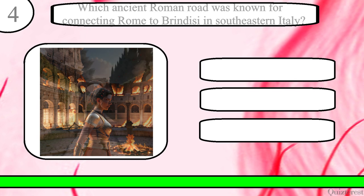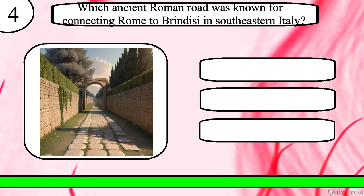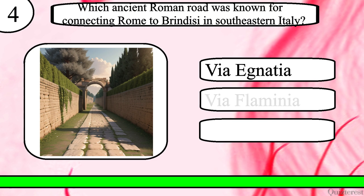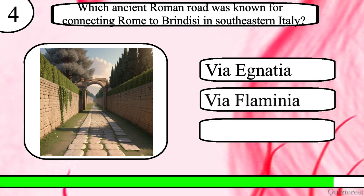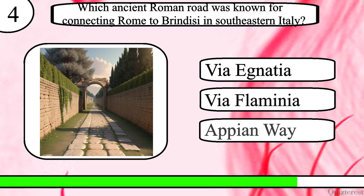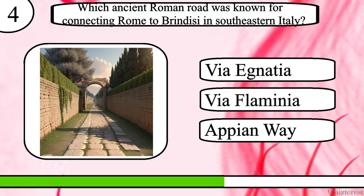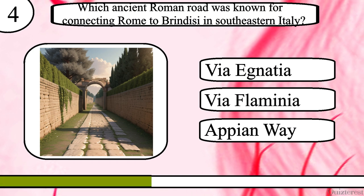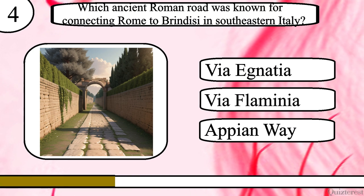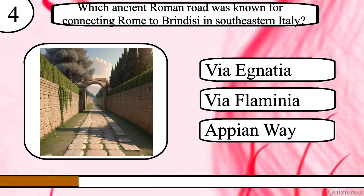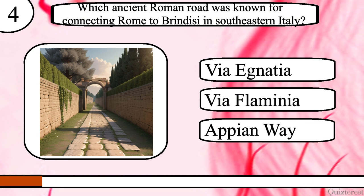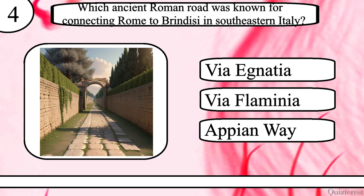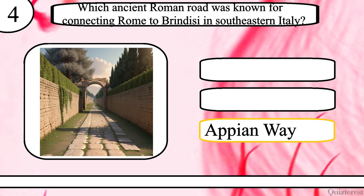Question 4. Which ancient Roman road was known for connecting Rome to Brindisi in south-eastern Italy? Via Ignatia, Via Flaminia or Appian Way? The correct answer is Appian Way.